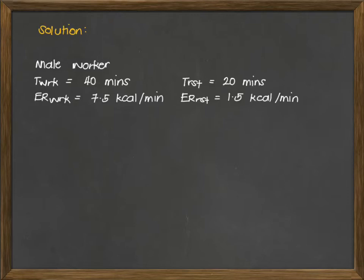In this type of problem, the resting energy expenditure rate of 1.5 kcal per minute is a constant. If the energy expenditure rate for resting is not provided in the problem, it is always assumed to be 1.5 kcal per minute. We are to compute for ER bar.